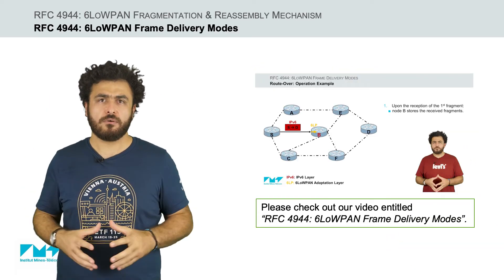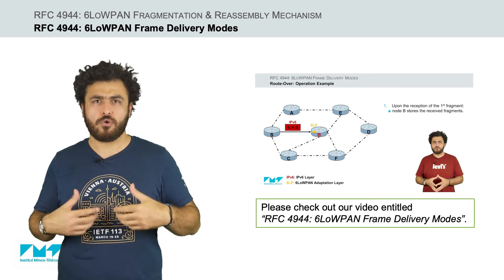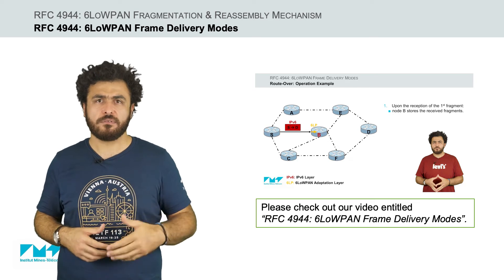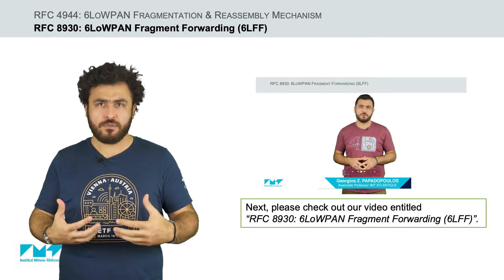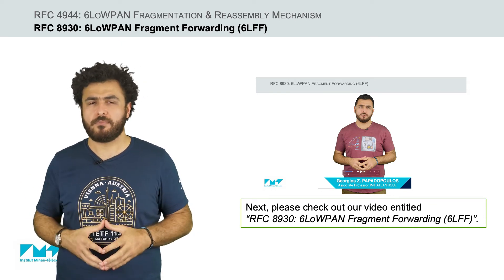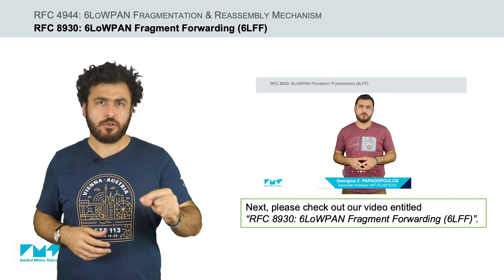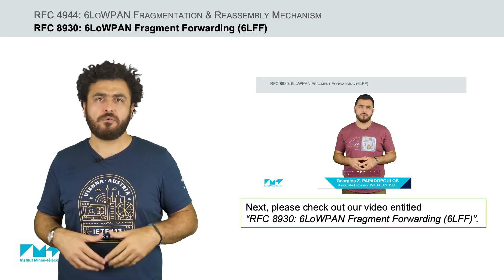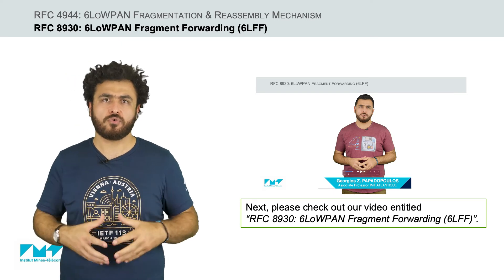In our video RFC 4944 6LoWPAN frame delivery mode, we are going to see how the fragmented frames are delivered to the final destination. Finally, you might have noticed that the IPv6 header is missing from the subsequent fragments. In our video RFC 8930 6LoWPAN fragment forwarding, or 6LFF, we explain how these subsequent fragments are forwarded without the use of IPv6.